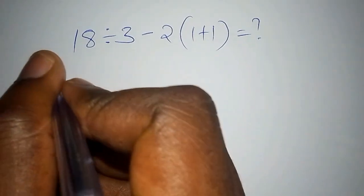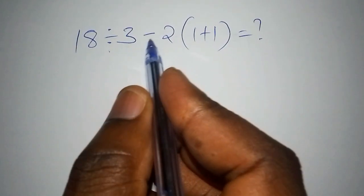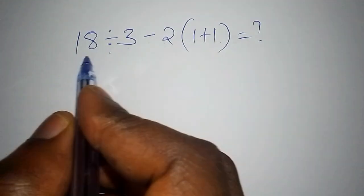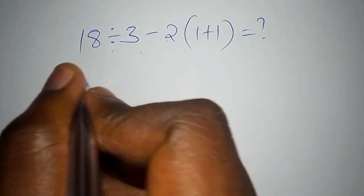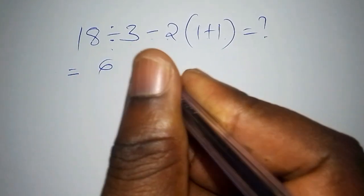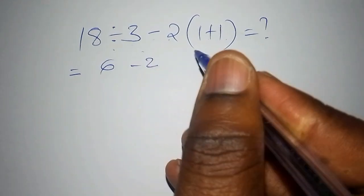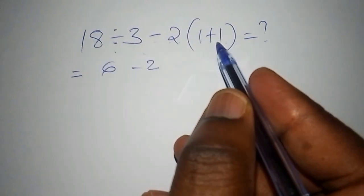They might say that 18 divided by 3 minus 2 into bracket 1 plus 1, it's just worked out directly by saying 18 divided by 3. Then you say this equals 6, then subtract from 2.